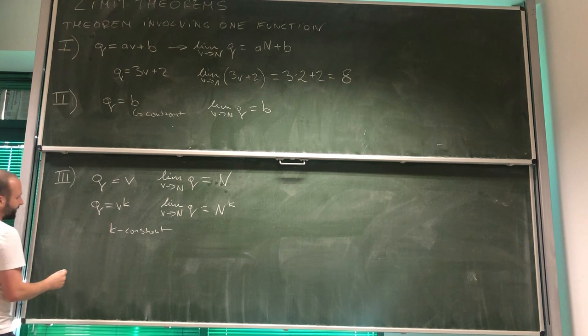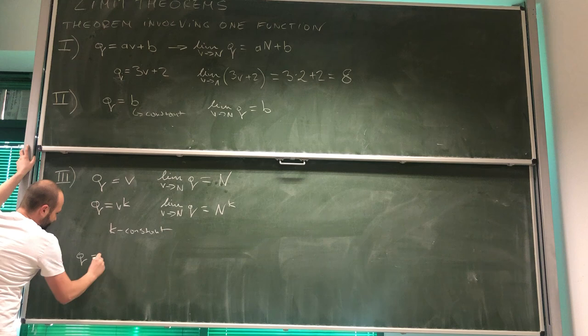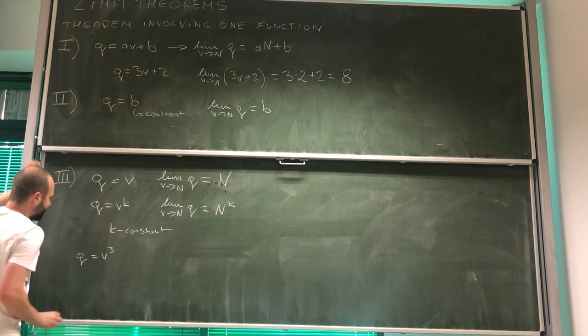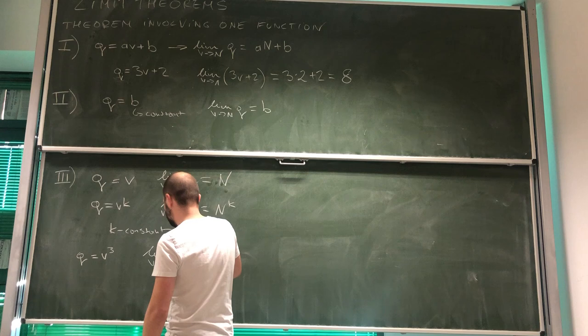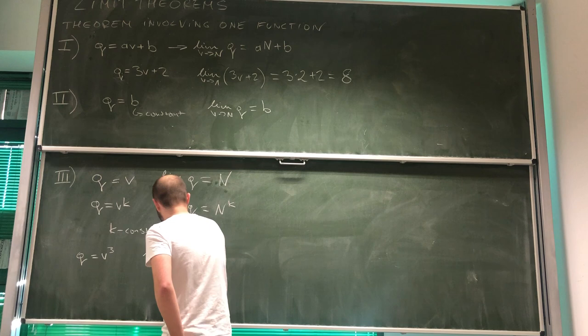For example, if our q is equal to v to the power of k and v is approaching 2, then the limit with v approaching 2 out of q is 2 to the power of k, which is 8.